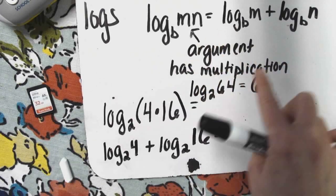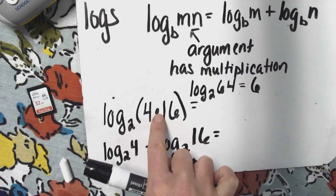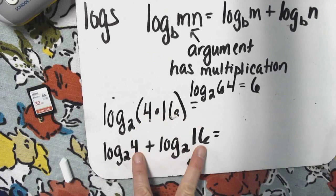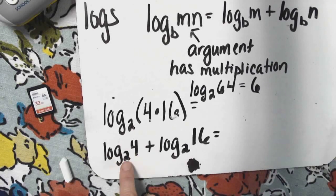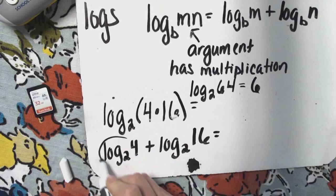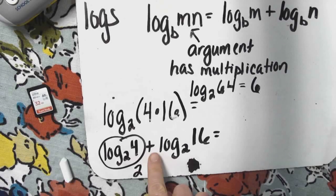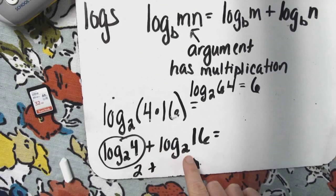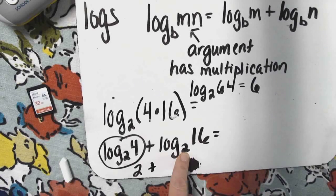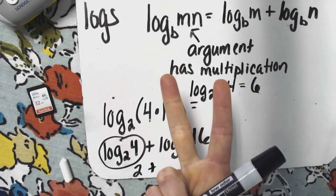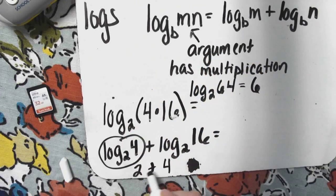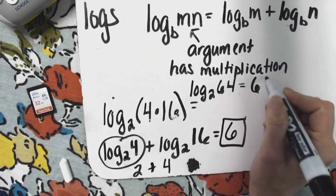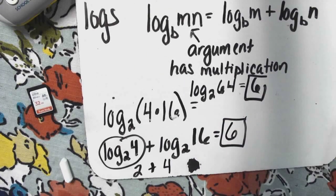Now I did what this property up here says to do. If you have multiplication in the argument, you could simply divide it up into two logs. Let's see if we get the same answer. Log base 2 of 4, it takes 2. So this log expression right here is 2 plus log base 2 of 16. It takes 4. And you get 2 plus 4. You get the same answer.